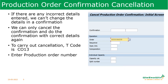Next is production order confirmation cancellation. Why might this be needed? During the production order confirmation, there may be some incorrect details — maybe the quantity entered is wrong, the material entered may be wrong, or the activity entered may be wrong. Whenever we enter these kinds of wrong details, those things cannot be changed as part of the confirmation. What we can do is cancel the confirmation and then correct the details with another confirmation.